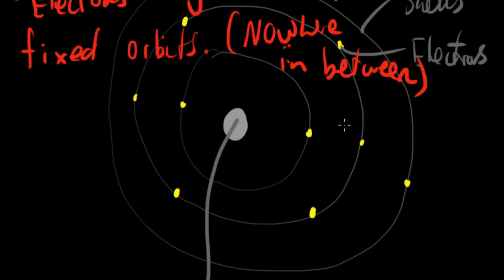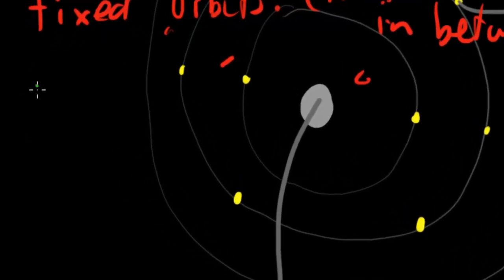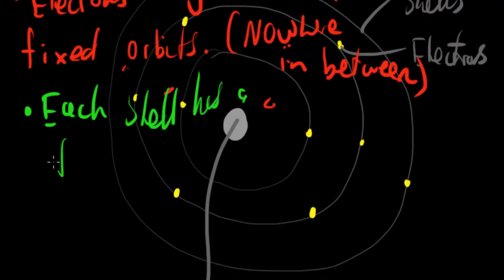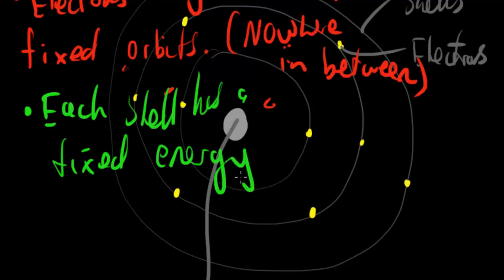Electrons existed only in these fixed orbits — here, here, here — and not in between. The second principle Niels Bohr proposed with his model of the atom was that each shell has a fixed energy. This basically meant that electrons in shells closer to the nucleus had a lower fixed energy level than shells further out, and shells further out had progressively higher energy levels.